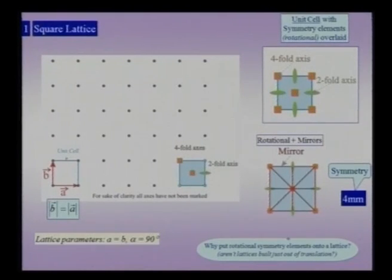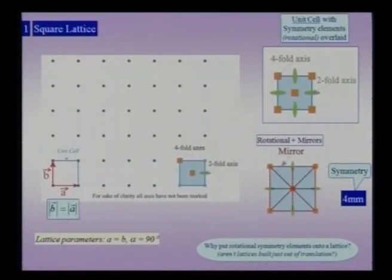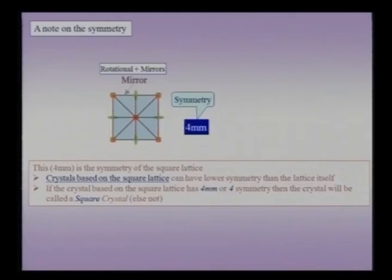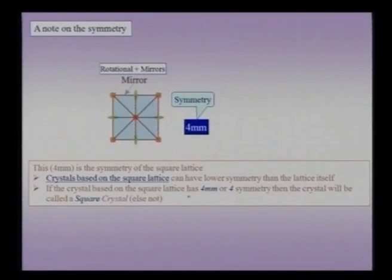We asked ourselves: why do we put symmetry operators on top of a lattice? The answer is that we are going to consider crystals, and the classification of crystals is based on symmetry, not merely on the lattice translation vector. If a crystal is based on the square lattice, it can have 4mm symmetry — identical to the symmetry of the lattice — or it could have a lower symmetry like a 4-fold only. In such a crystal the mirror planes would be lost, but if the 4-fold symmetry is still present, such a crystal would be called a square crystal.